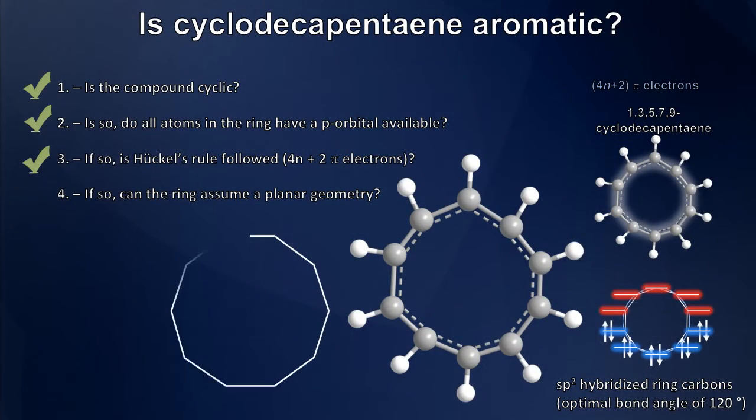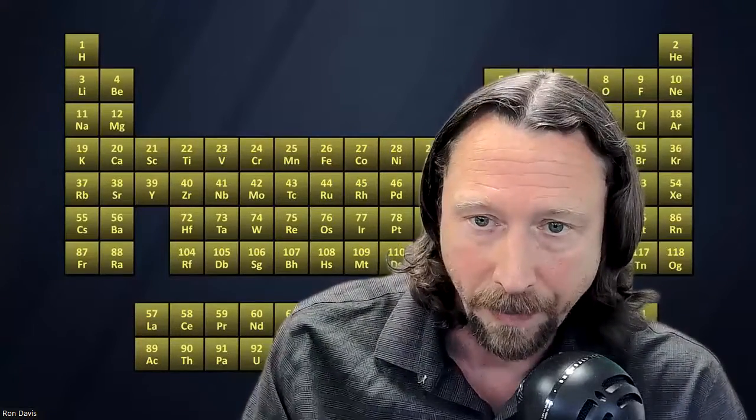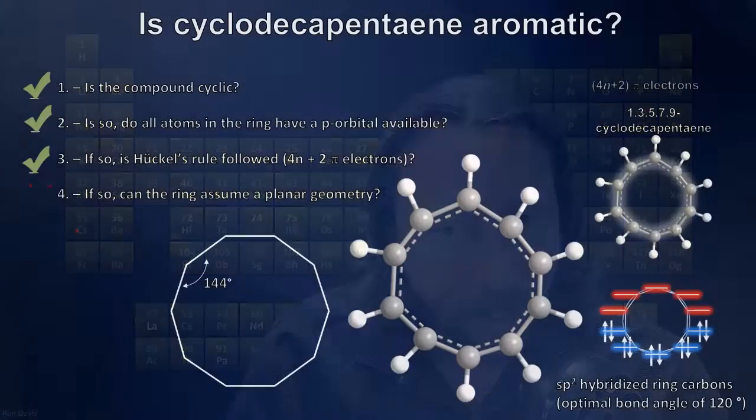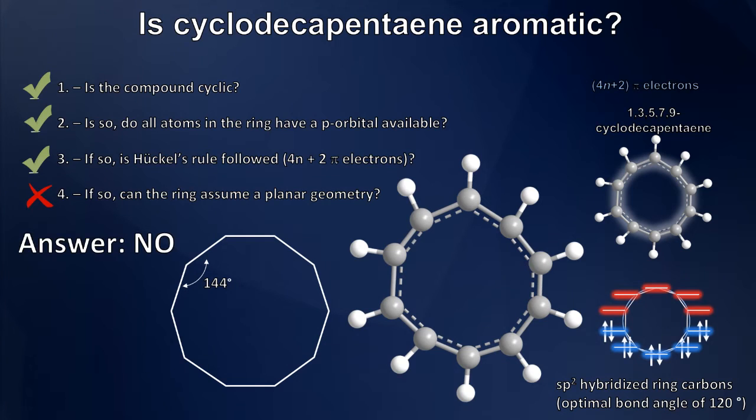And if we look really closely, what we notice is, the interior bond angles of that structure would have to be 144 degrees. And yet, we already determined that those ring carbons are sp2 hybridized and should have an optimal interior bond angle of about 120 degrees. What this means is that this compound can't lay flat. There is too much ring strain associated with obtaining a planar geometry. And therefore, this cannot be an aromatic compound.